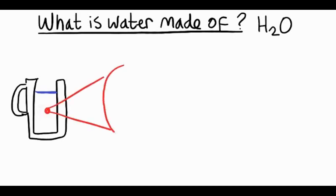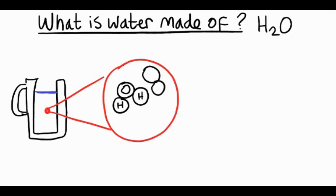If we could zoom right in on water and see the thing it's made up of, we'd find it's made up of water molecules. And the water molecules are made of an oxygen atom joined to two hydrogen atoms. A molecule is just a group of atoms chemically joined together.